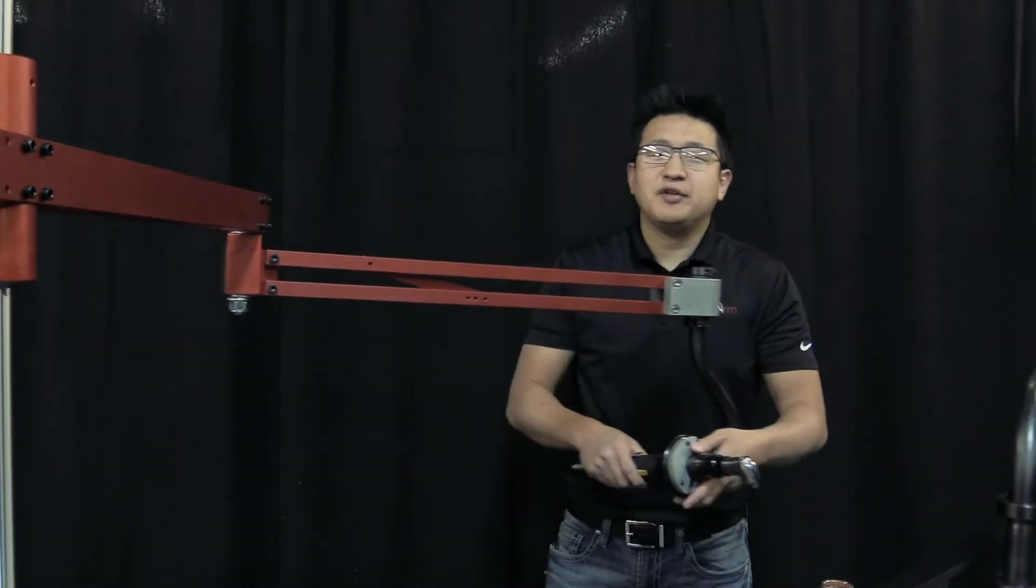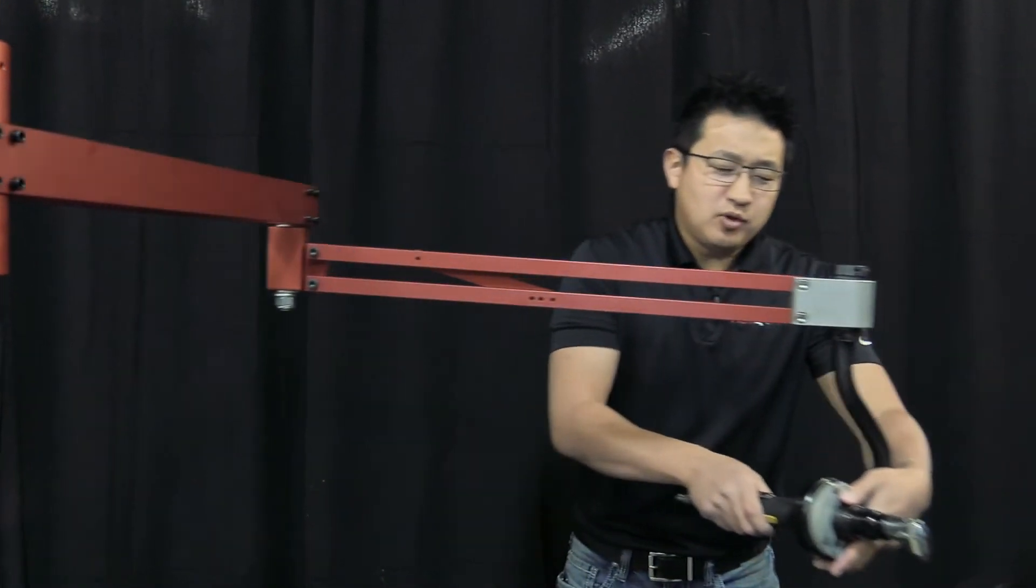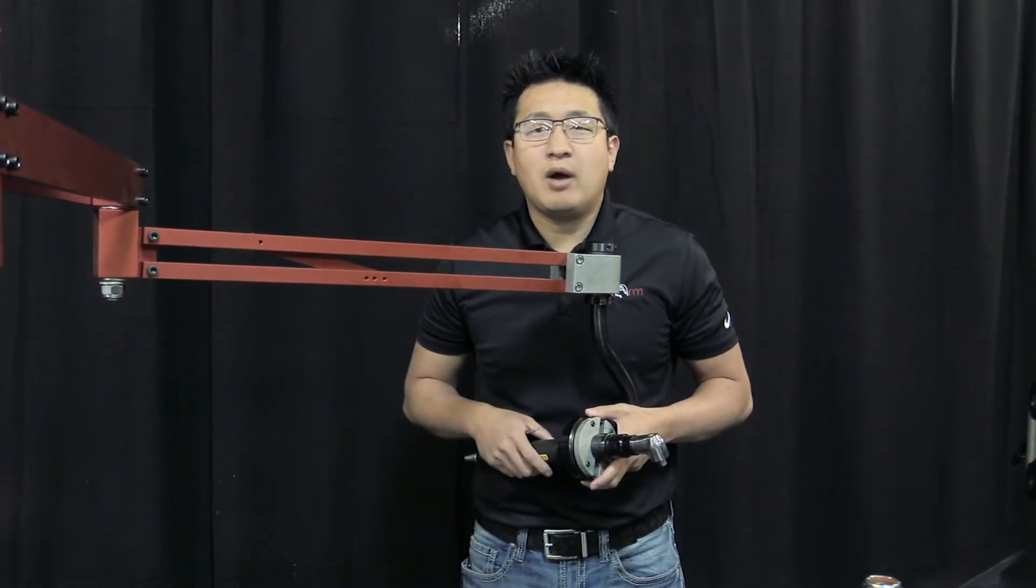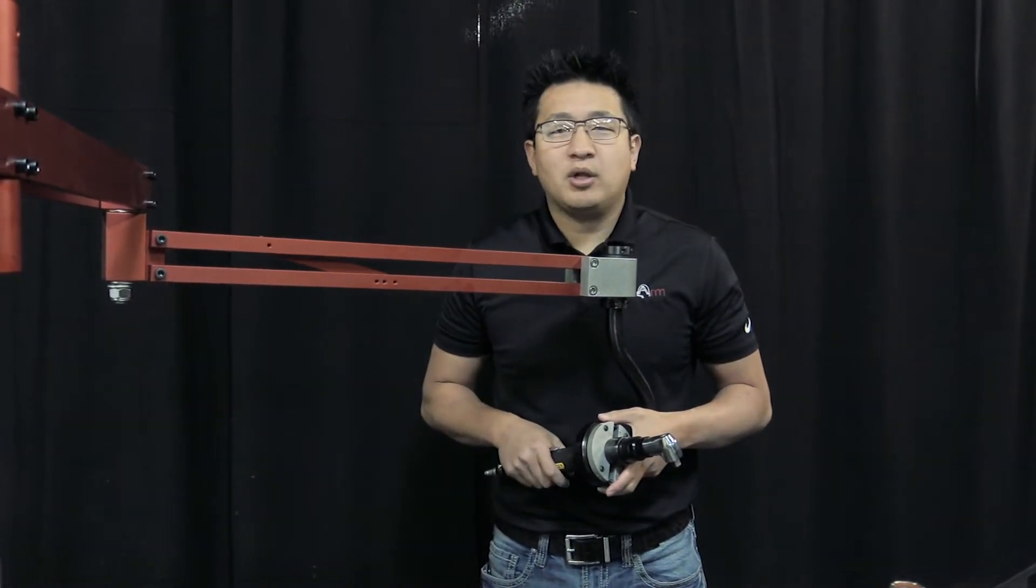You're looking at roughly 1,100 millimeters, and the ability to reach out and around an obstruction is really the reason we went with this arm versus one of our parallel arm systems.